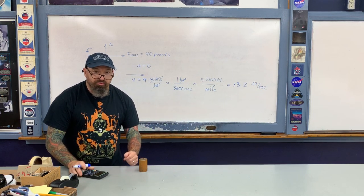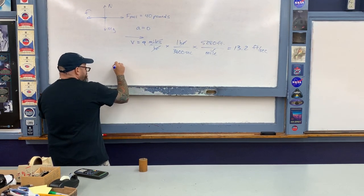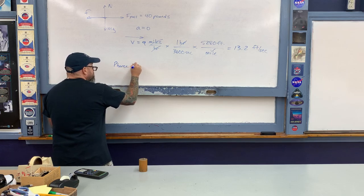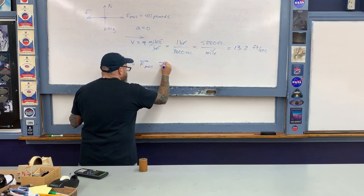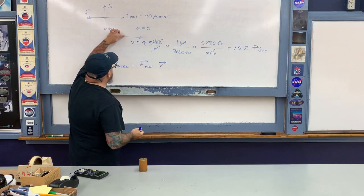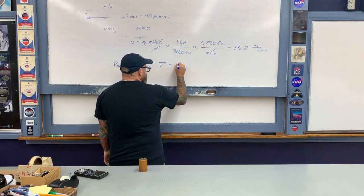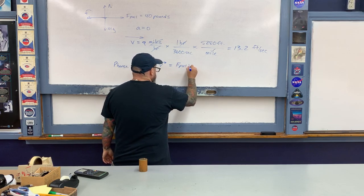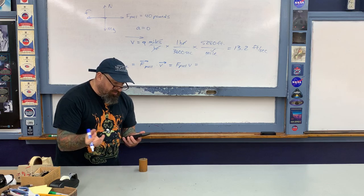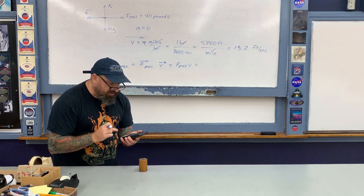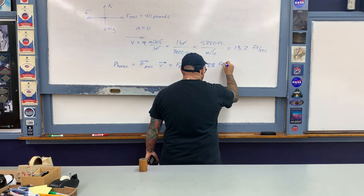The force diagram shows F_pull (40 lbs) balanced by friction (40 lbs) at constant speed, with velocity v in the direction of the pull. The instantaneous power output of the horse is the dot product of F_pull and v. Since these vectors are in the same direction, it's simply force times speed: 40 pounds × 13.2 ft/s = 528 foot-pounds per second.